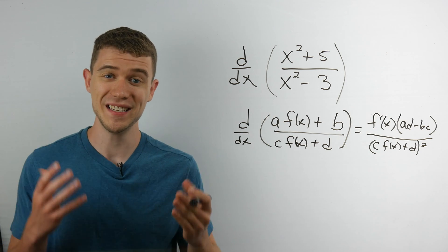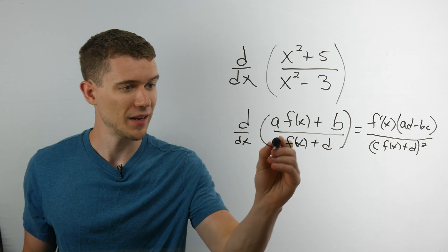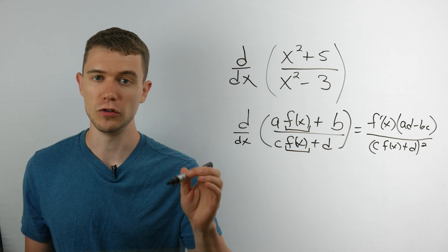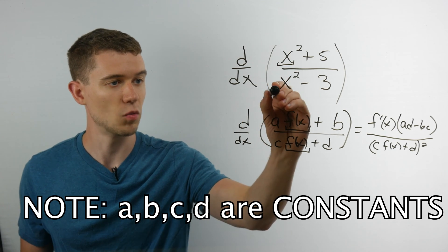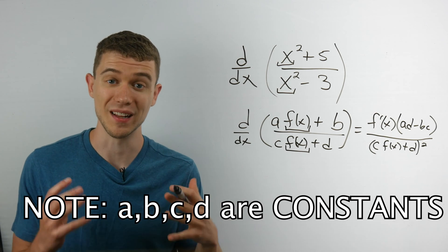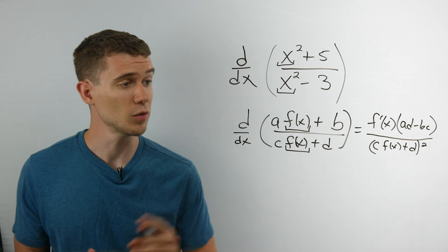So here it is, here is the trick and what makes it work is when these functions exactly match. And you'll notice with this exact problem, this x squared and this x squared exactly match and that's what allows us to use this quotient rule shortcut.